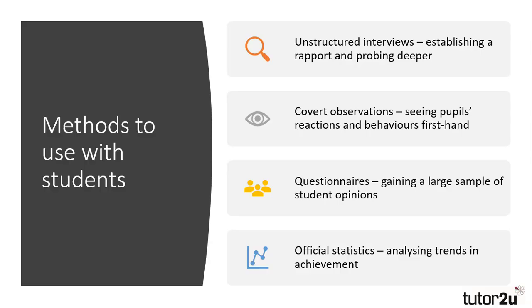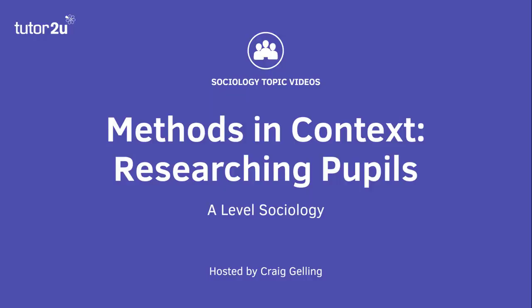Official statistics give a researcher a broad view of trends in education, such as exclusions, university entrance and achievement. Of course, sociologists may use other methods as well, or even combine methods in what is called methodological pluralism or triangulation. That concludes this Tutor2U Sociology topic video looking at Methods in Context and focusing on research with pupils. Thanks for watching.